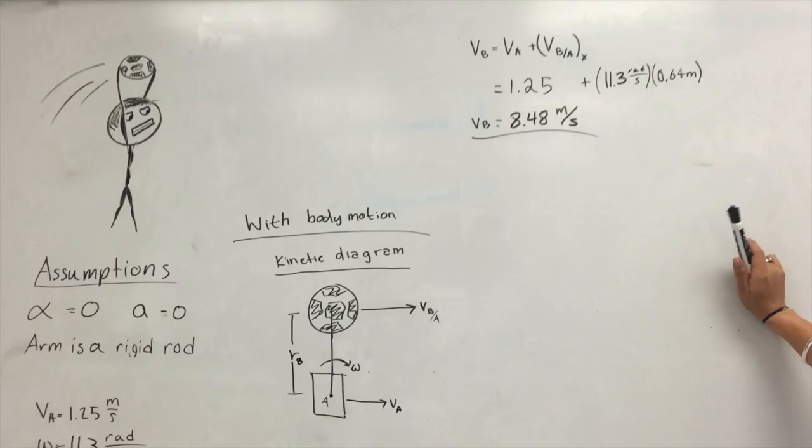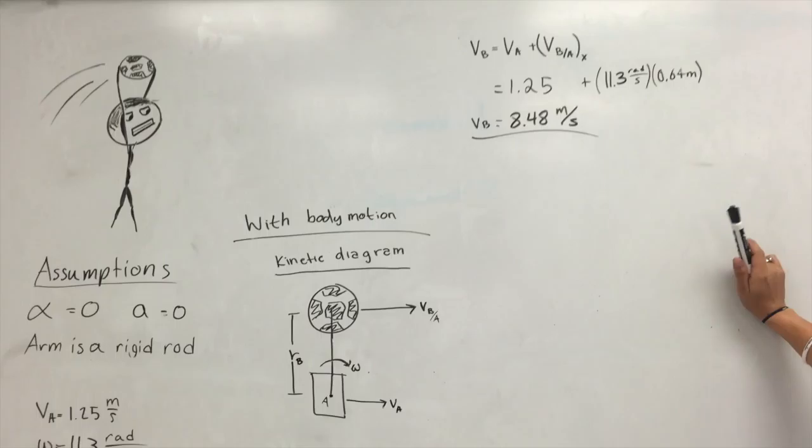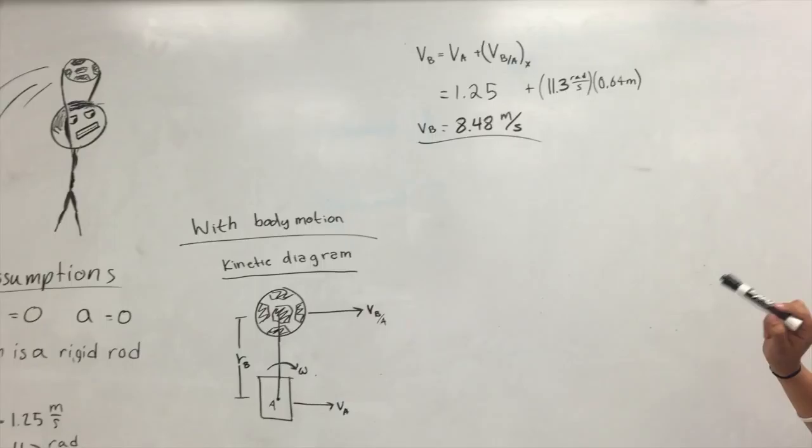Then we use the equation to solve for VB. VB equals VA plus VB with respect to A. When we plug in those numbers, we get that VB equals 8.48 meters per second.